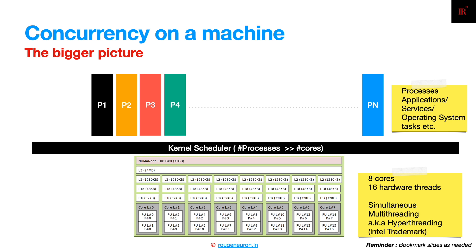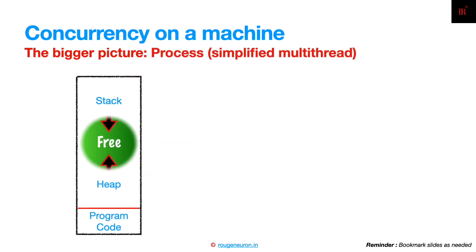We'll now see how that is made possible. Each process has a set of memory locations allocated for specific tasks: a stack, a heap, and a program code segment. The actual instructions come from the program code segment, which is static and cannot change at runtime.